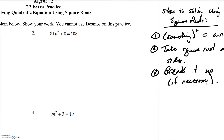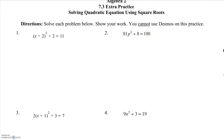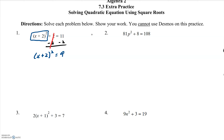Let's take a look at problem number one. We need to get something squared by itself equal to a regular number. I notice on the left-hand side I have x plus 2, all squared. I need to get that by itself. There's a plus 2 left over, so I subtract 2 from both sides. That cancels the plus 2, and I'm left with x plus 2 quantity squared equals 11 minus 2, which is 9.